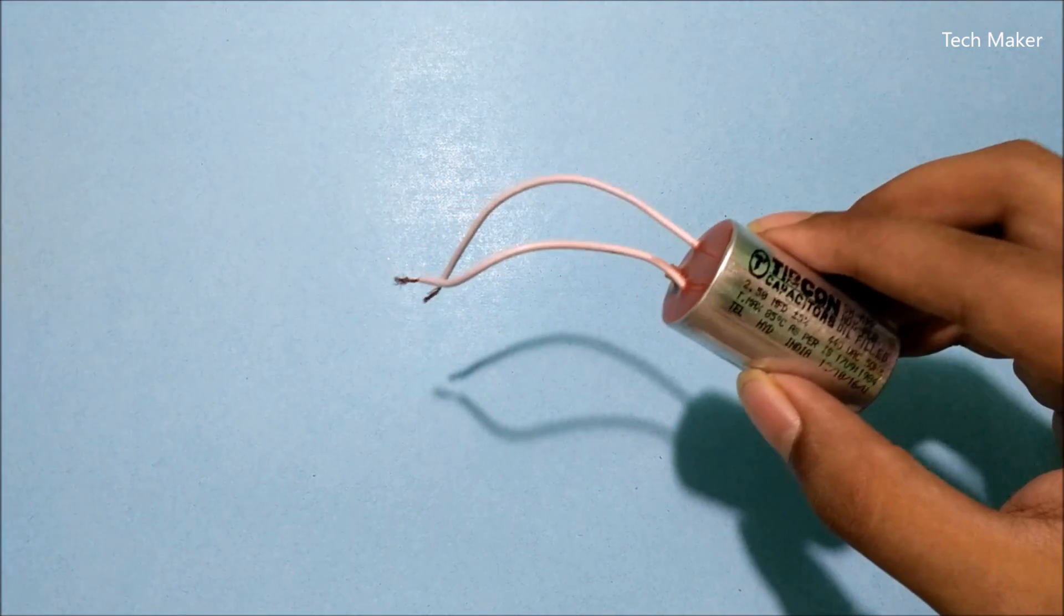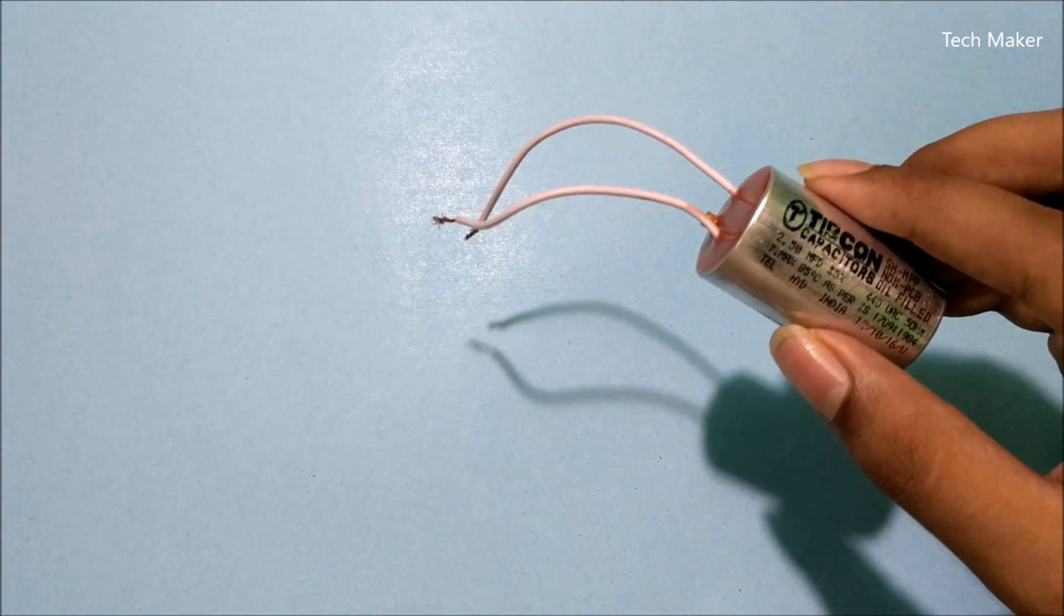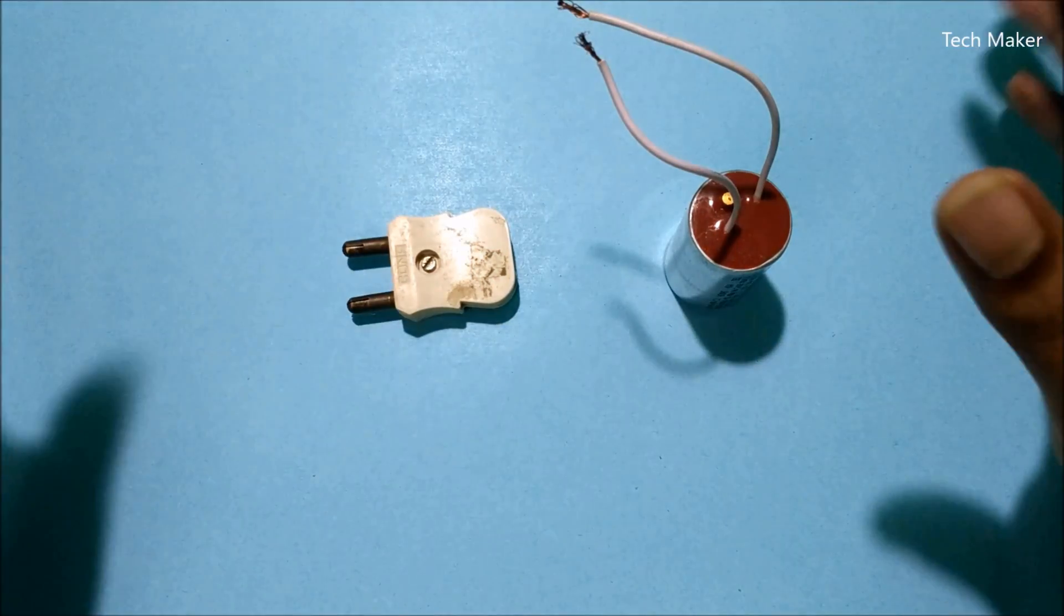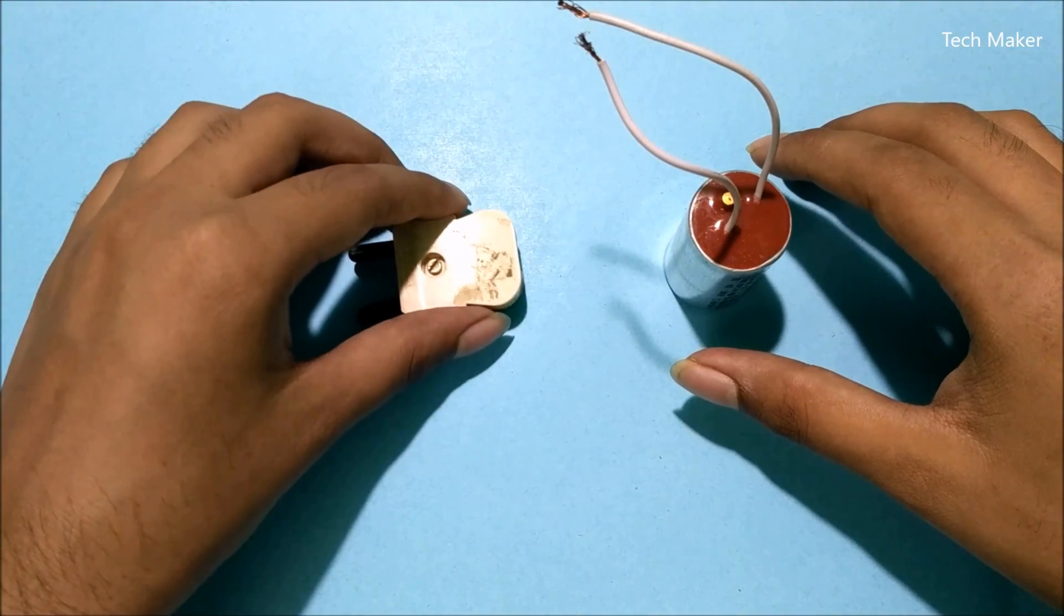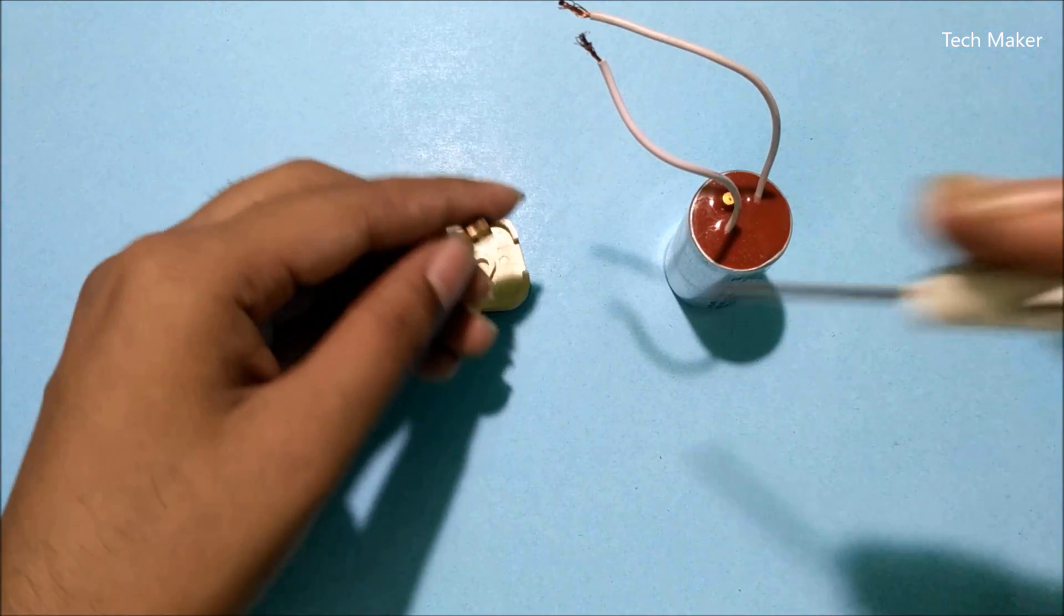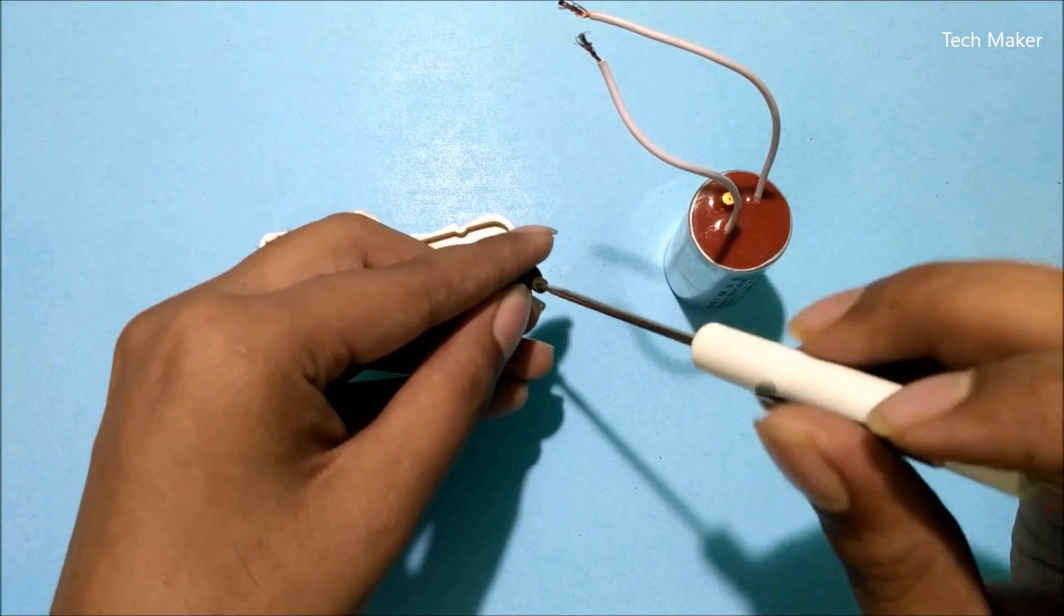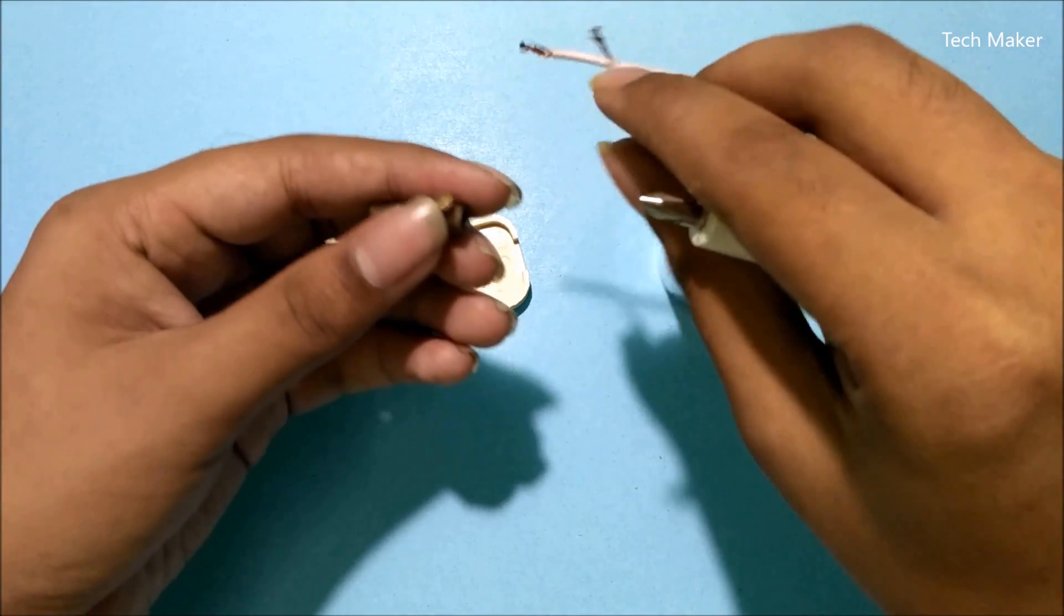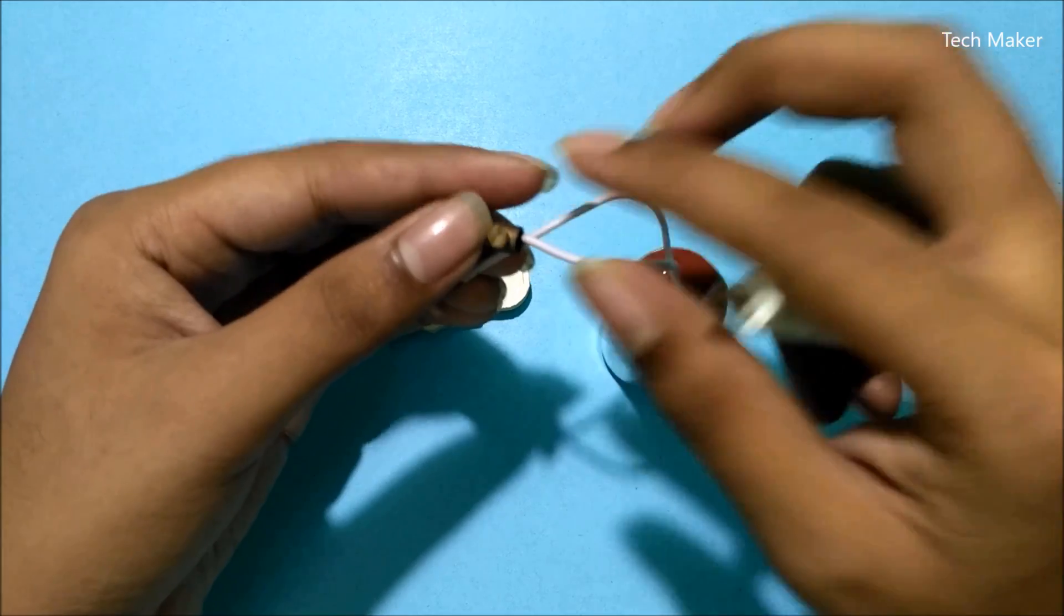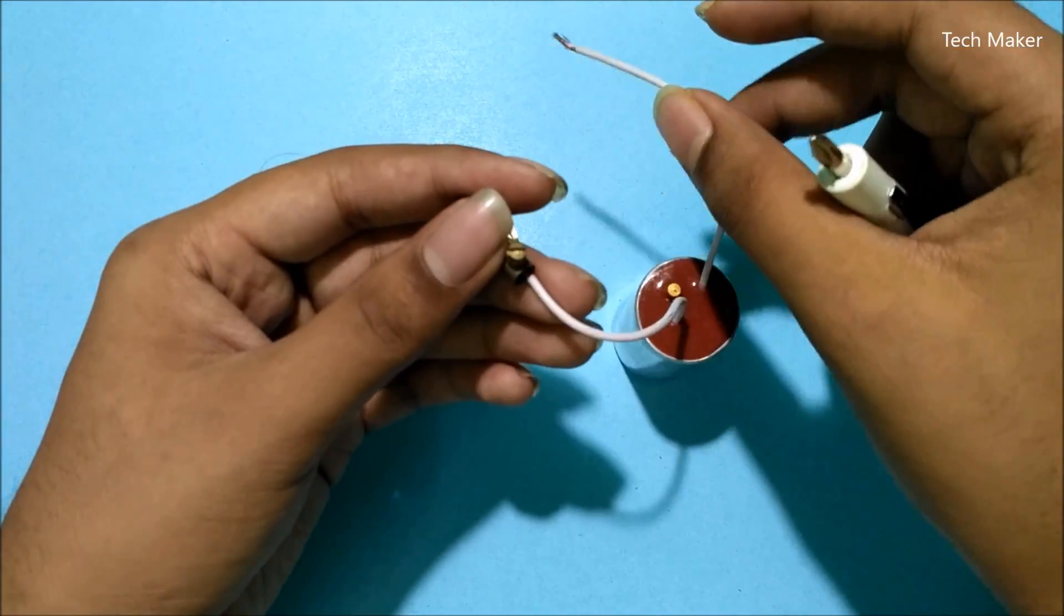The things you need for making power saver are one plug and one capacitor, that's all. Now I am removing this. Just what you need to do is you need to connect this capacitor parallel to your source, that's all. The working of this power saver will be in next video.